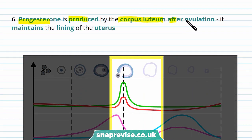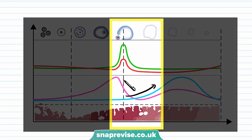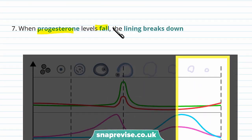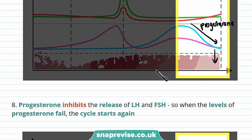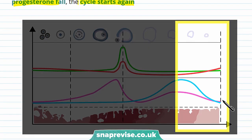Progesterone is produced by the corpus luteum after ovulation, when the egg is released, and this maintains the lining of the uterus. You can see the levels of progesterone increase here. When progesterone levels fall, the lining breaks down. As progesterone inhibits the release of LH and FSH, when its levels fall it no longer inhibits them, so the levels of LH and FSH increase and the cycle starts again.